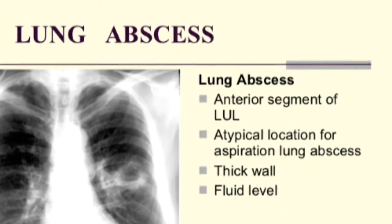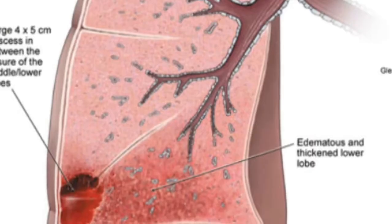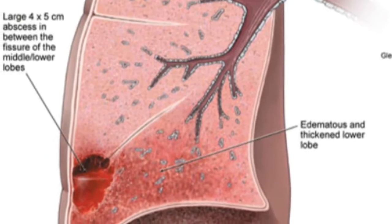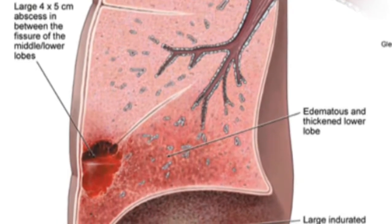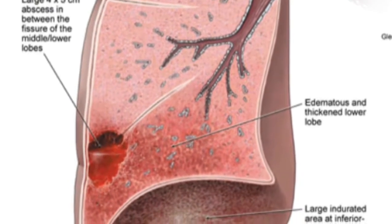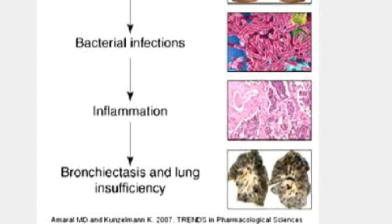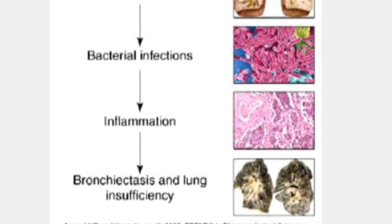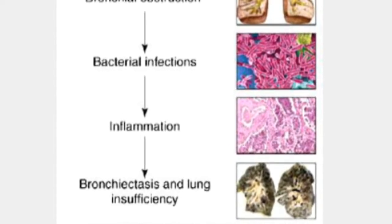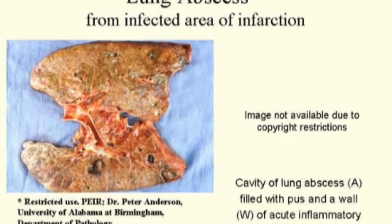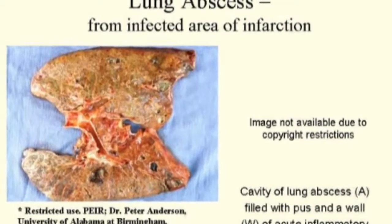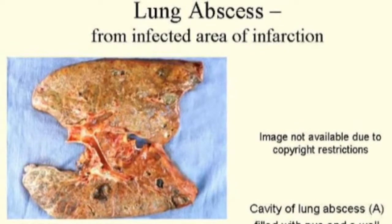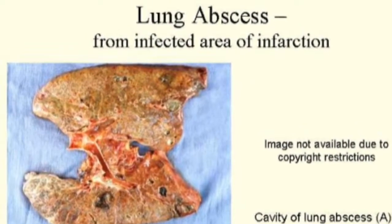By definition, a lung abscess is more than 2 cm in diameter and has a wall of variable thickness. The abscess cavity is usually filled with purulent secretions. Posterior segments of the right upper lobe and apical segments of the lower lobe of both lungs are commonly affected after aspiration. Abscesses due to other mechanisms may involve any segment, and an abscess usually communicates with a bronchus.